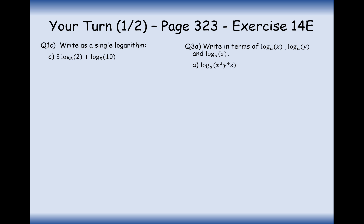Here are two sets of questions on logarithm functions - pause the video and have a go. For question 1c, first bring the powers inside the logs: log base 5 of 2 to the power of 3, which is 8, plus log base 5 of 10. Check that both bases are 5. Then add these logs together by multiplying: log base 5 of 80 is the final answer.